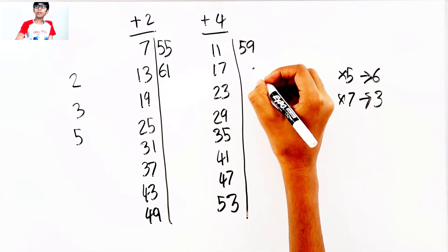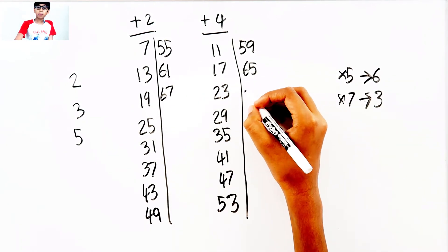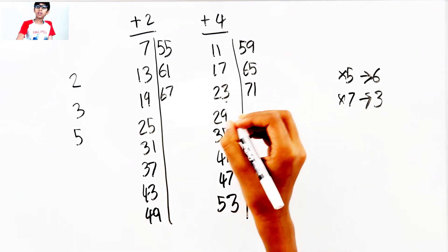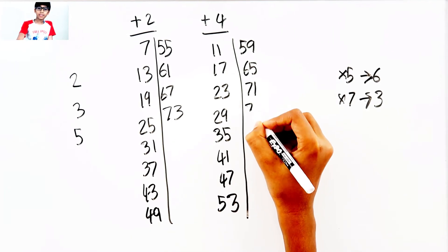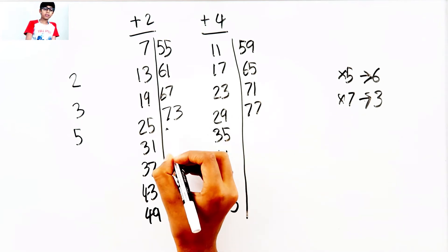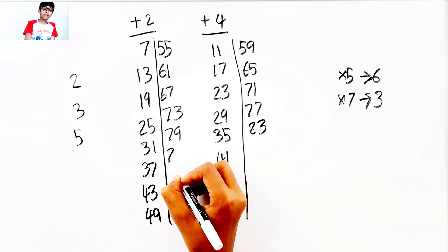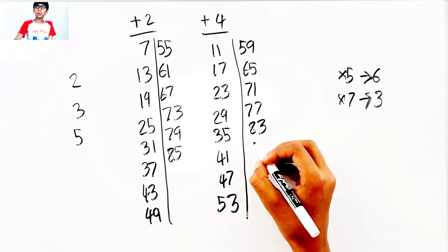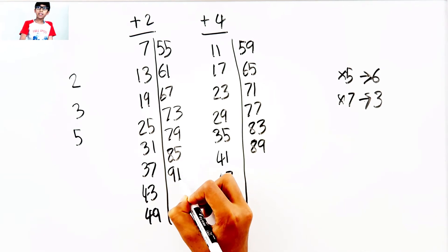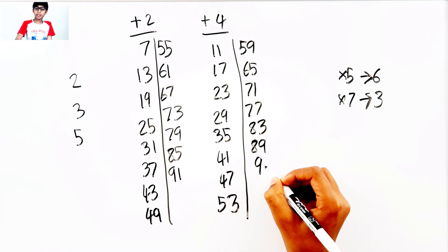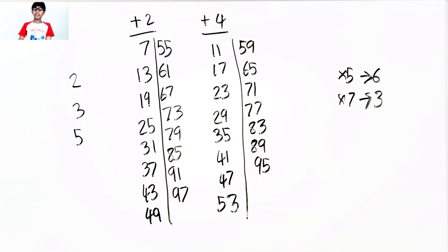83, plus 2, 85, plus 4, 89, plus 2, 91, plus 2, 95, plus 4, 97. That's it. Now I need to find six numbers that end with 5. So 25.